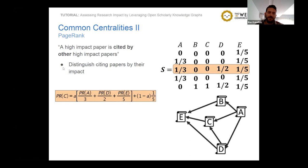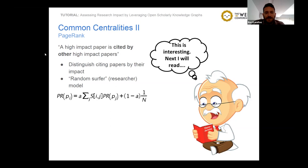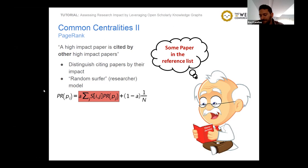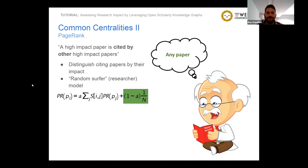This equation models the behavior of a random surfer — or in the context of citation networks, a random researcher. The idea is that a person starts reading papers at random and, after reading paper i, chooses a paper from the reference list with equal probability; this behavior happens alpha percent of the time. With probability one minus alpha, this entity chooses any paper in the collection at random. This method has had early applications since 2007 in the works of Chen and Ma, and many other works since then.